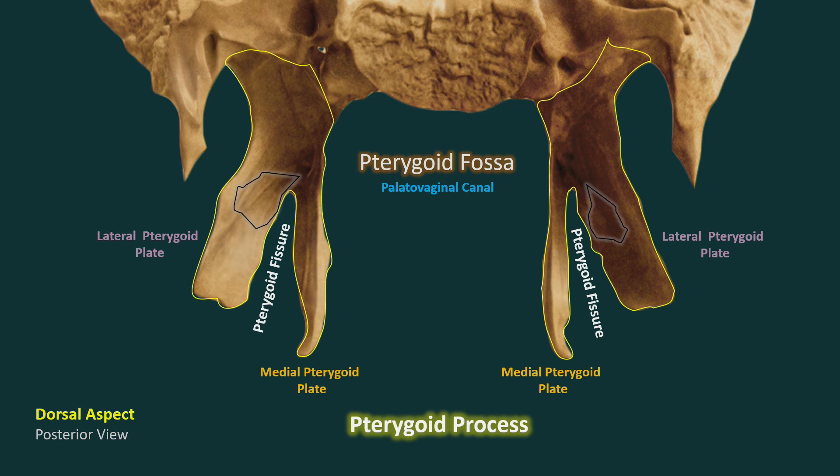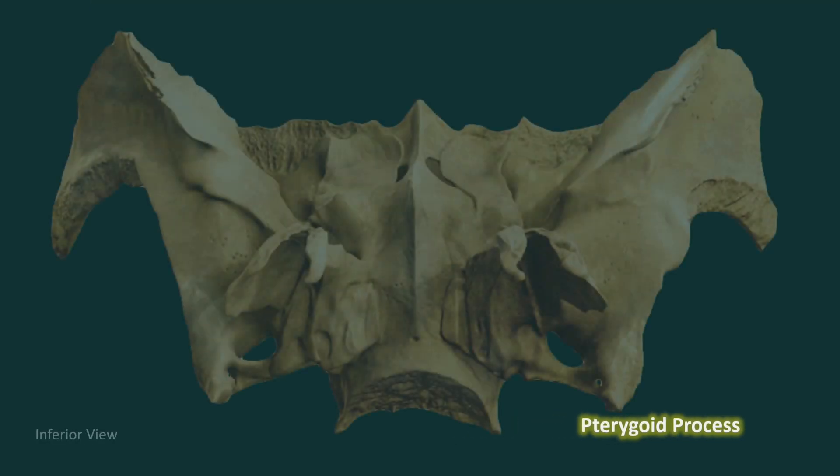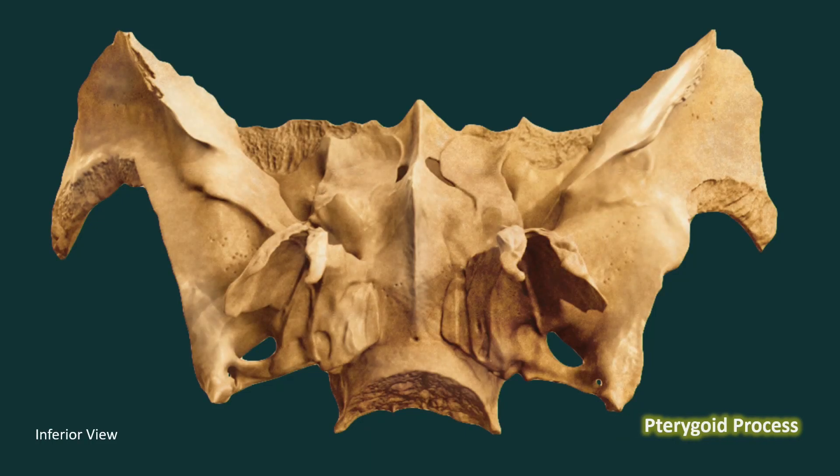On the inferior side of the pterygoid process of the sphenoid bone, there is a pterygoid notch between the medial and the lateral plates, into which the pyramidal process of the palatine bone fits.